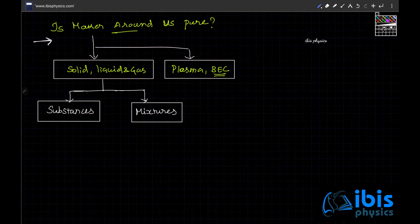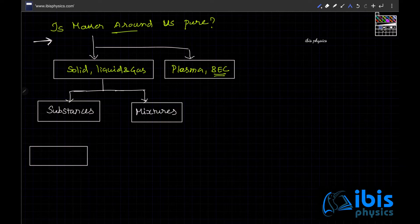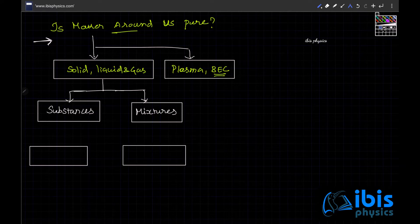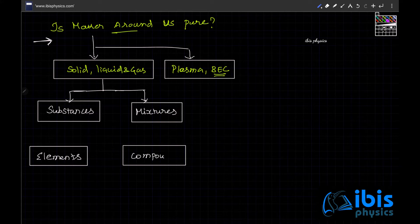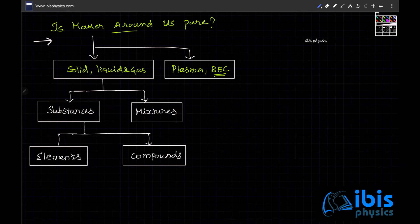Substances are sometimes referred to as pure substances. Substances can further be classified as elements and compounds. I'll give examples for each of them so we better understand.